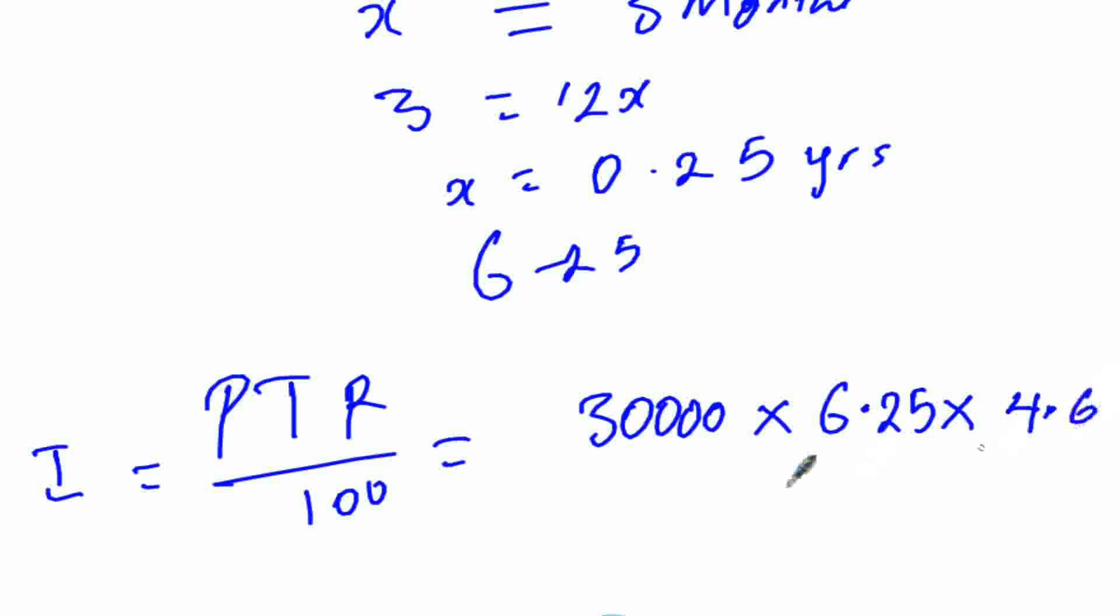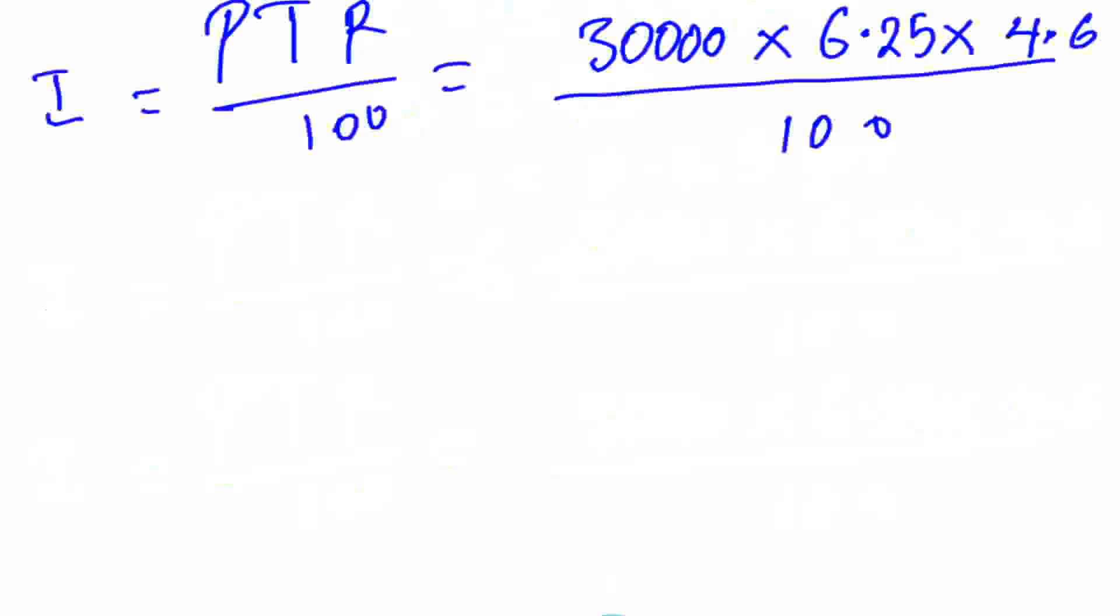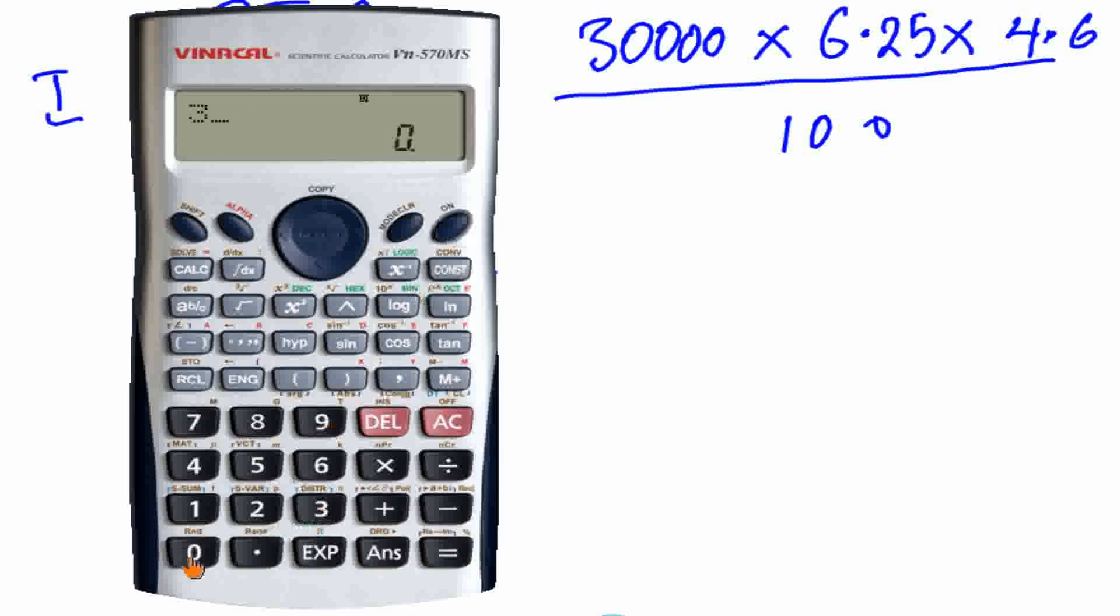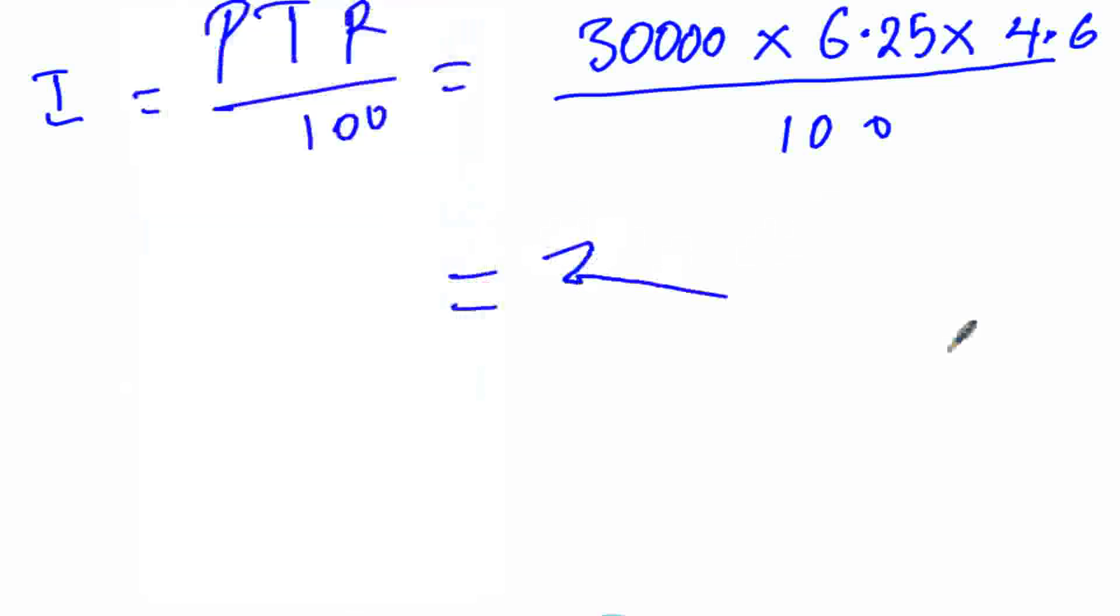This will give us—in this case, to save time, use the calculator—which will give us 30,000 times 6.25 times 4.6, then divided by 100. It gives us 8,625 dollars. So that is our answer: $8,625.